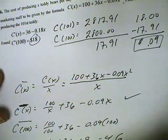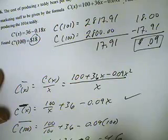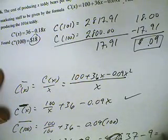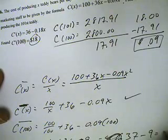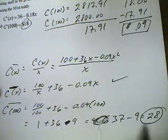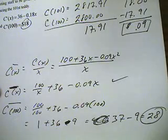I want to recheck my math to make sure I'm doing that correctly. Oh, I'm sorry, I missed that negative sign. So let's put that negative sign in there. This will be 37 minus 9, and 37 minus 9 is going to give us 28. So that will be $28, the average cost of producing 100.